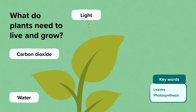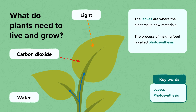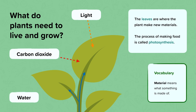Light, carbon dioxide from the air and water are needed for the plant to make new materials during growth. Materials means what something is made of. The leaves are where the plant makes new materials. The process of making food is called photosynthesis.